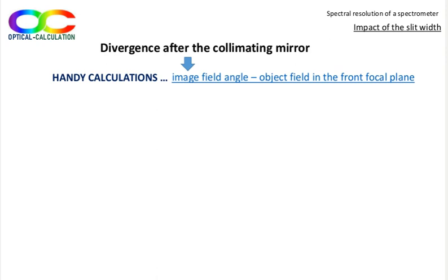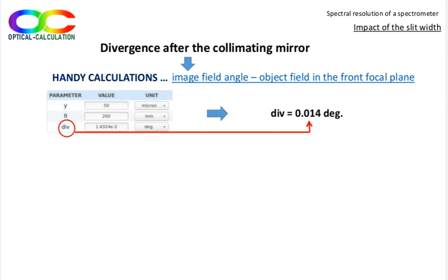Calculating the beam divergence after the collimating mirror can be done with the handy calculation page, image field angle, given object field in the front focal plane. This calculation is suitable for any paraxial system. The slit is 50 micron wide, it's the Y parameter, and the collimating mirror has a focal length of 200 mm, it's the Fi parameter. The calculated divergence, perpendicularly to the slit, which is the parameter div, displayed here in the same table that the input, is rounded to 0.014 degrees.